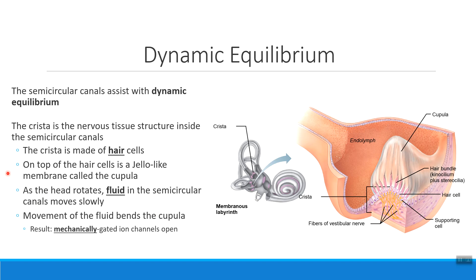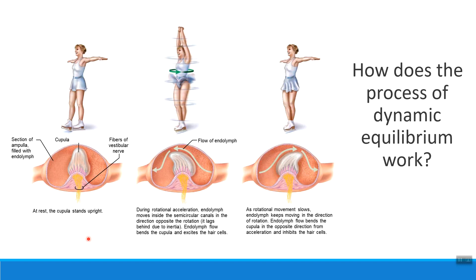So both types of equilibrium use different structures but ultimately the same type of cells — hair cells with mechanically gated ion channels. In dynamic equilibrium, we're detecting rotational movements. Before you start spinning, when your body is stable, the cupula on top of your hair cells stands straight upright. When it's upright, we send a few small pings back to the brain letting it know there's no rotation right now.